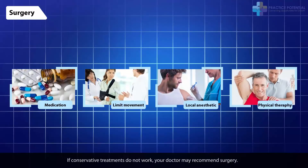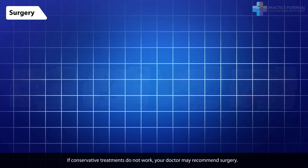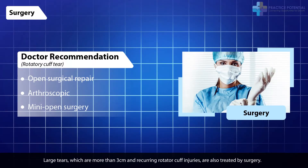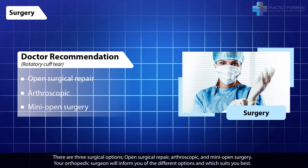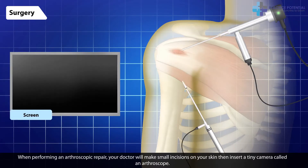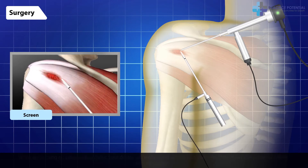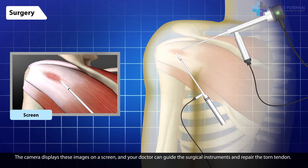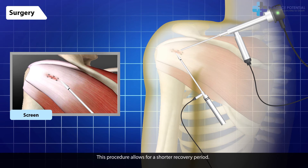Surgery. If conservative treatments do not work, your doctor may recommend surgery. Large tears which are more than 3 cm and recurring rotator cuff injuries are also treated by surgery. There are three surgical options: open surgical repair, arthroscopic, and mini open surgery. Your orthopedic surgeon will inform you of the different options and which suits you best. When performing an arthroscopic repair, your doctor will make small incisions on your skin, then insert a tiny camera called an arthroscope. The camera displays images on a screen and your doctor can guide the surgical instruments and repair the torn tendon. This procedure allows for a shorter recovery period.